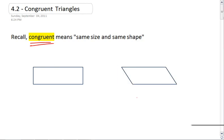So the two shapes I just drew can't be congruent because they're not the same shape. And even though the first and third shape that I drew are the same shape, they're not the same size. So they're also not congruent.